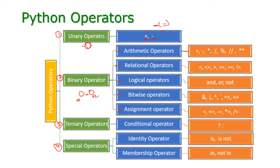In arithmetic operators we are having plus for adding two numbers, minus for subtracting two numbers, star for multiplying two numbers, slash for division, percentage for modulo, double slash for floor division, and double star for exponential or power operator. These are the arithmetic operators.